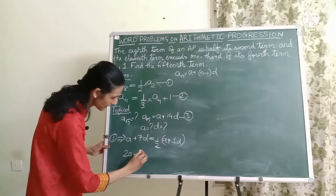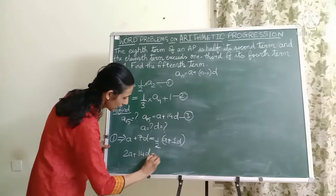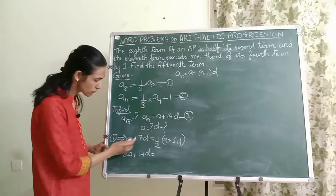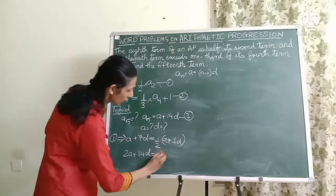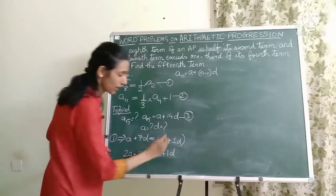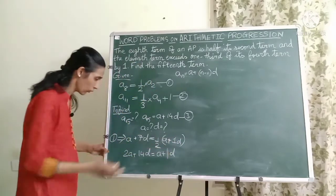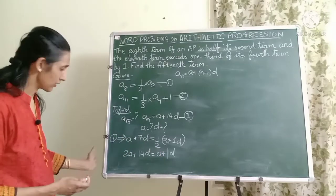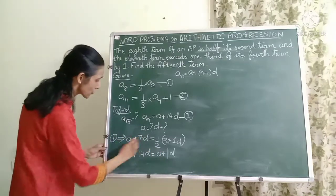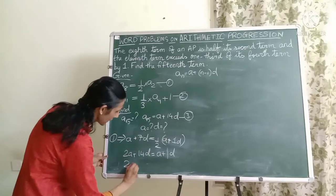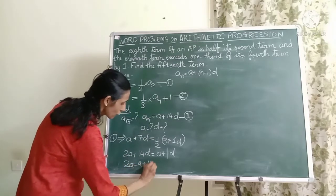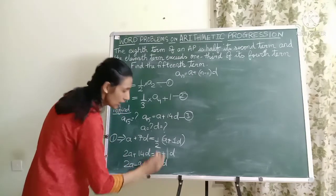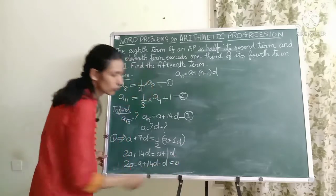So I'll get 2A plus 14D equals A plus D. I brought the 2 to the other side. Now just bring the terms to the other side. Bring it to the left side. So you'll get 2A minus A plus 14D minus D.